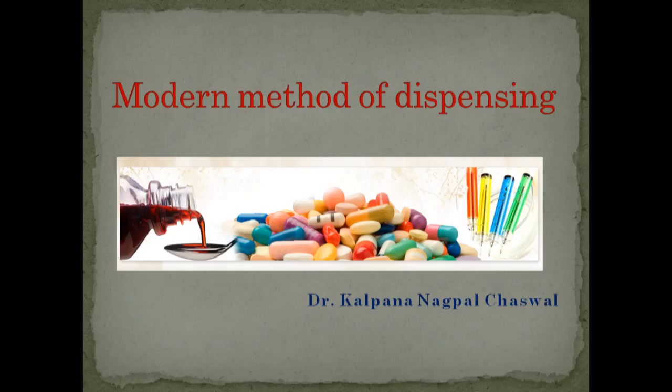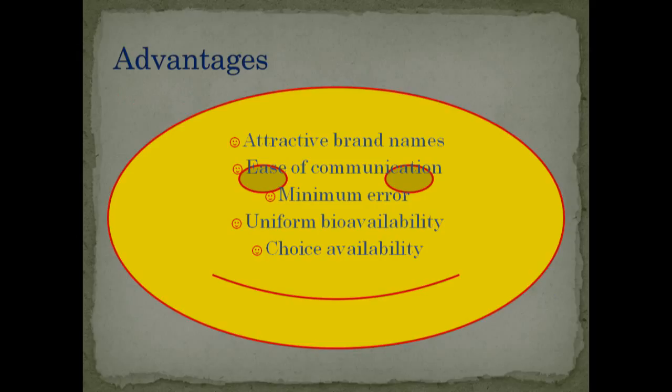Let's discuss the possible advantages and disadvantages of the modern method of dispensing. Starting with the advantages: the brand names are very catchy compared to the official name. For example, Lasix for furosemide, Alprox for alprazolam, Disprin for aspirin, etc. The next point is it is quite convenient to tell the patient — that means the ease of communication is there.